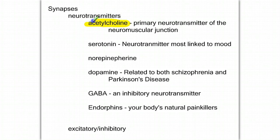Let's talk about some specific neurotransmitters. Acetylcholine is a neurotransmitter that we need to know. Acetylcholine is the primary neurotransmitter of the neuromuscular junction. It is the chemical that our motor neurons use to talk to our muscle cells.